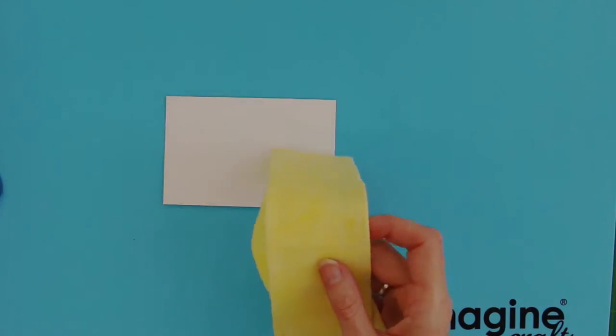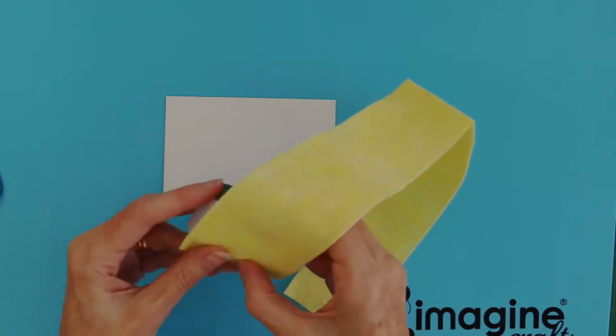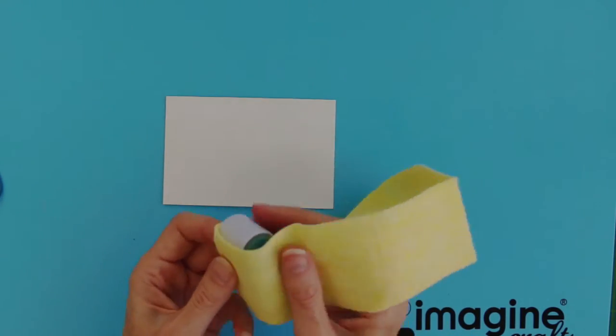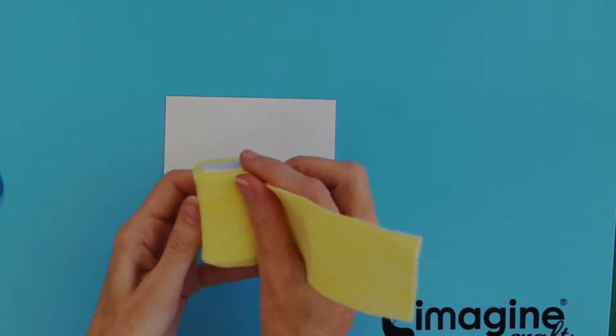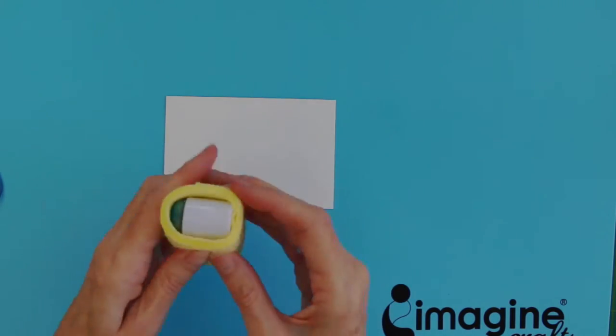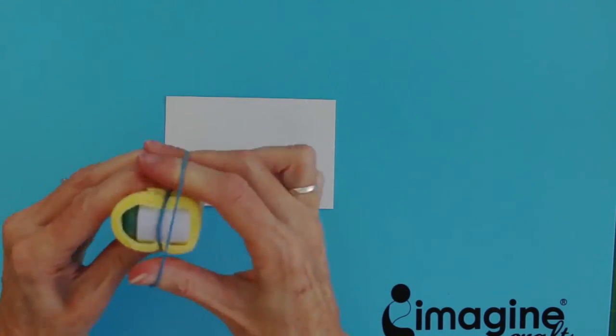I have a small amount of dishcloth here that I've cut off and I'm using an old inked dauber. I'm going to wrap the felt dishcloth around my inked dauber and then attach it with an elastic band.